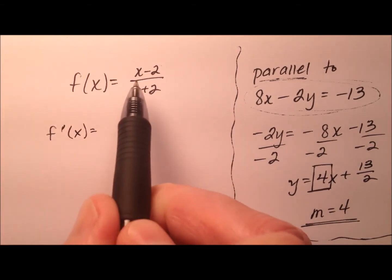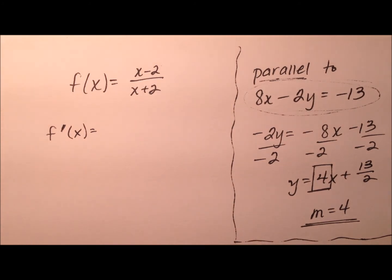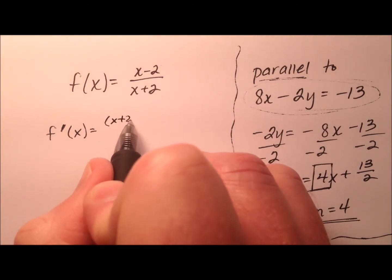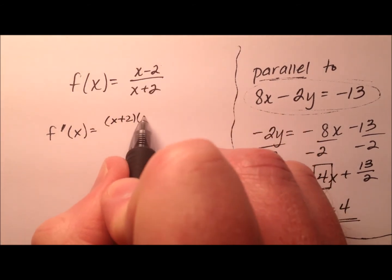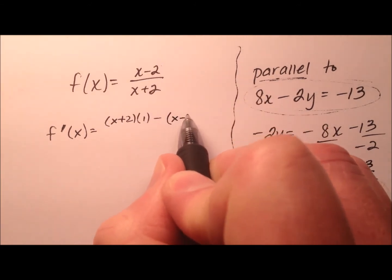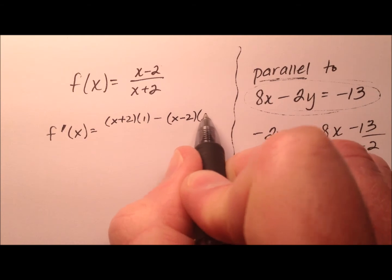And my function is x minus 2 over x plus 2. So it looks like I need to use the quotient rule. So it's low times the derivative of the numerator, so 1, minus high, so it's the numerator, times the derivative of the denominator.